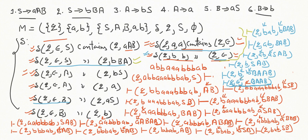We check for acceptance by empty store: whenever you process the entire input string, the stack must be emptied. Here, after processing all input, the stack still contains 'b a a b', which is not empty. Therefore, the given string is not accepted by this PDA.